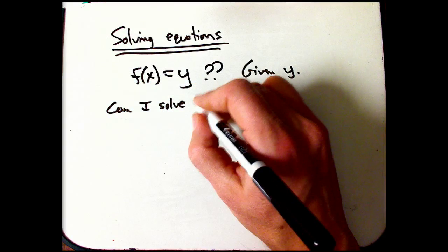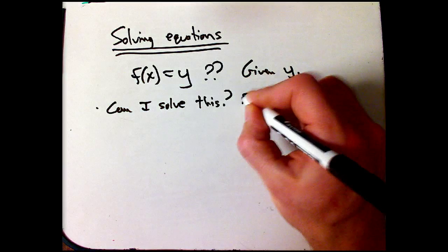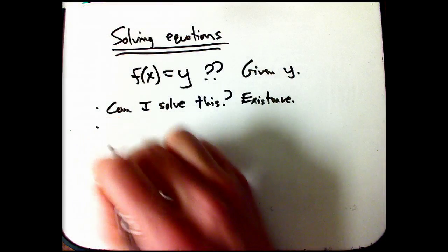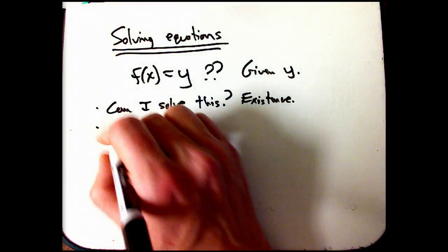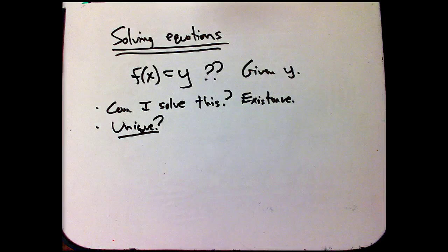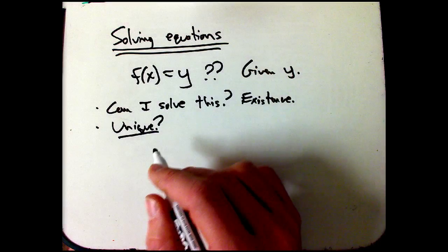There's standard questions here: can I solve this? Can I find an x? So that's the existence question, absolutely basic. If we're going to invert this function, the solution should be unique. That's going to turn out to be relatively easy, the uniqueness part of it, although it's kind of the other half of what I'm going to be telling you about.